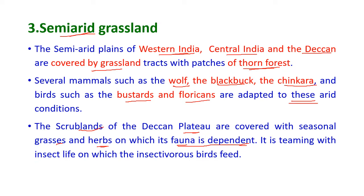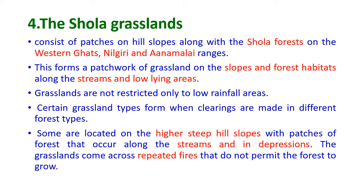The semi-arid grassland is also teeming with insect life on which insectivorous birds feed. Next is the shola grassland. The shola grasslands consist of patches on hill slopes along with shola forest on the Western Ghats, the Nilgiri and the Anamalai ranges, forming patches of grassland on the slopes with forest habitats along the streams and low-lying areas.